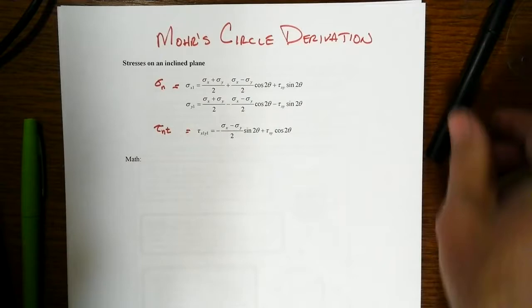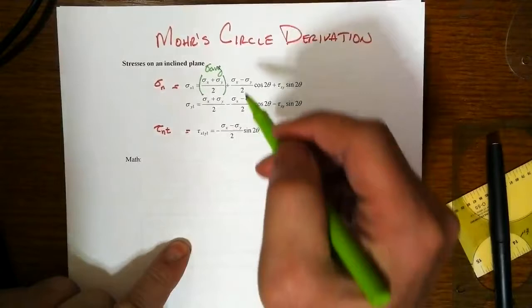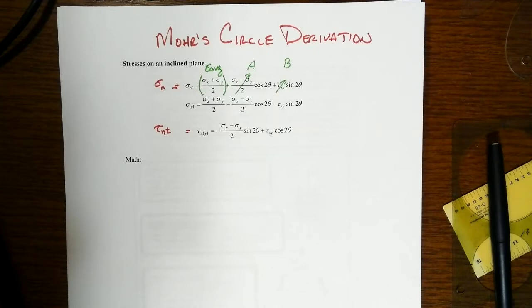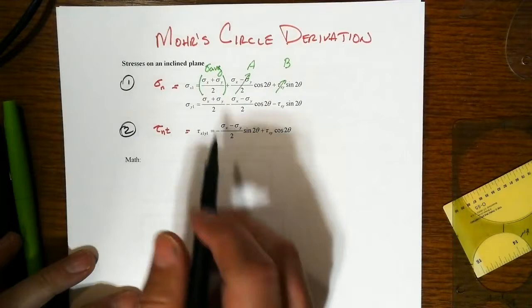Now there's going to be a couple little things that we'll do to make the development work easier. This first term, this one right there, that is just sigma average. Let's just call it that. And for all this development work, let's call this whole thing capital A. And to be consistent, we'll call that capital B. So there's equation one, there's equation two. And ultimately we're going to work with these and create an equation that turns out to be the equation of a circle.